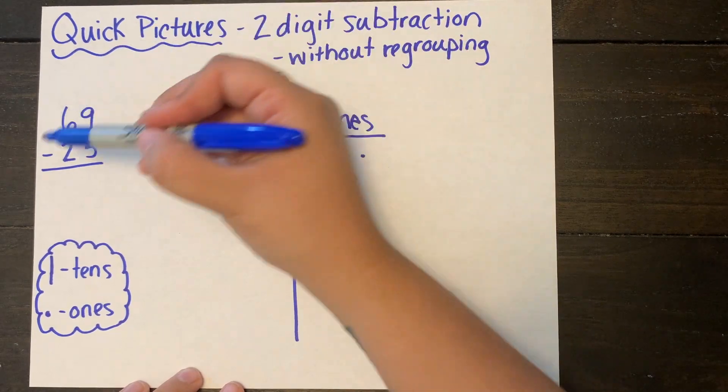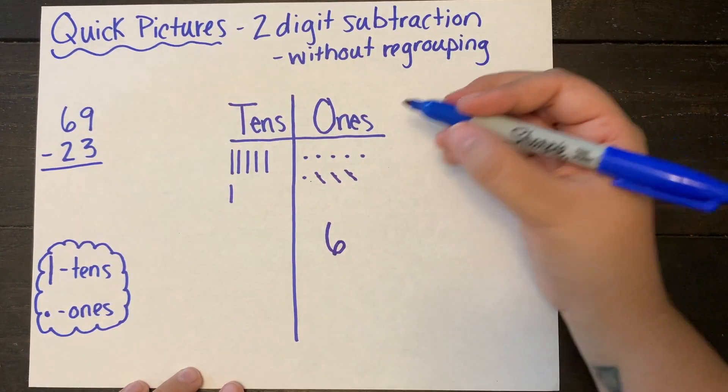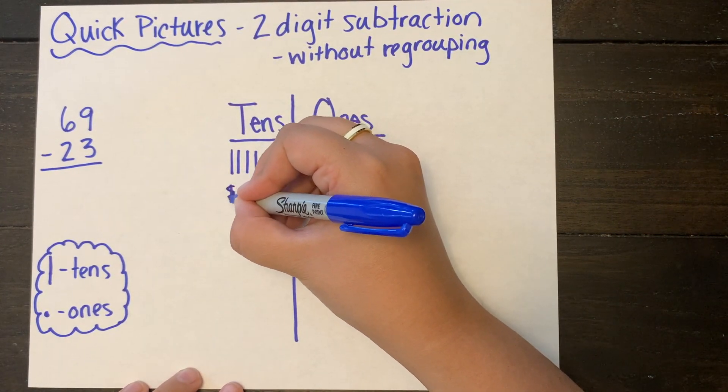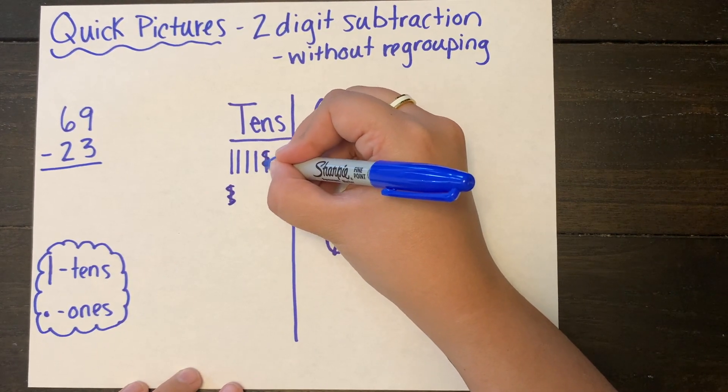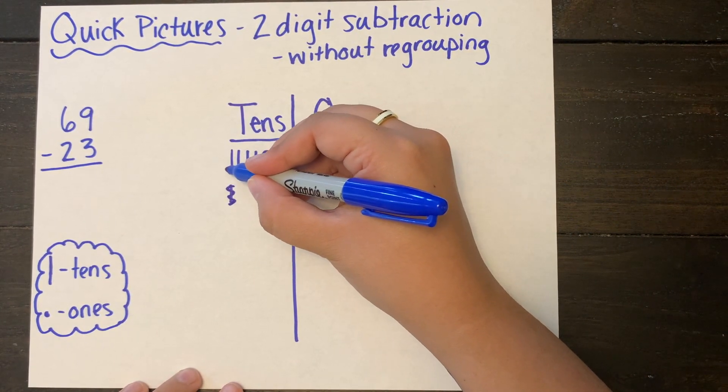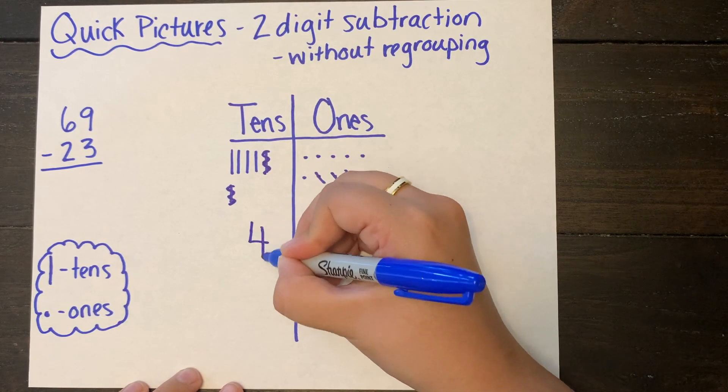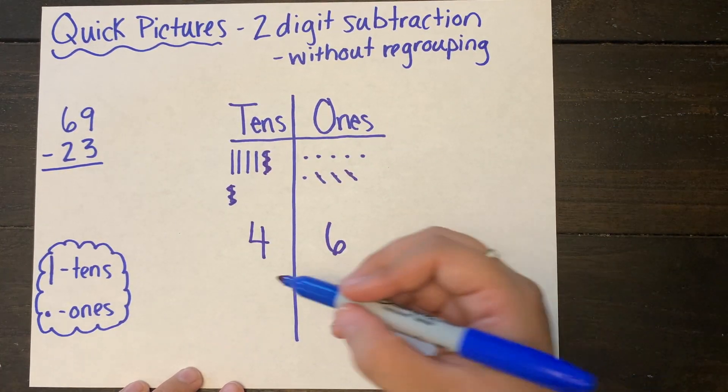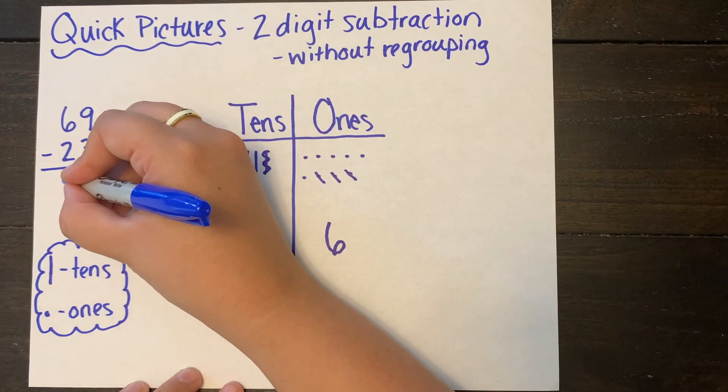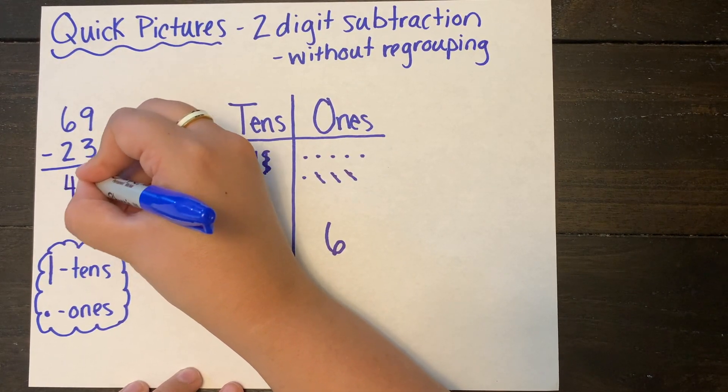I don't have to do any regrouping. I'm going to go to my tens column. I'm taking two tens away and I'm doing squiggly lines for these because if I just cross them out, sometimes I can confuse them. And my answer is 46. Pretty easy.